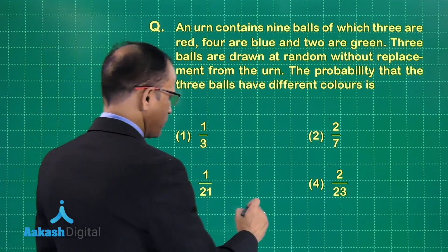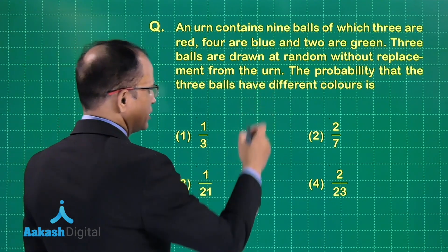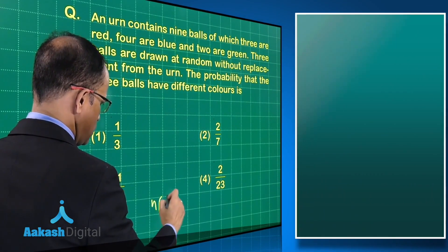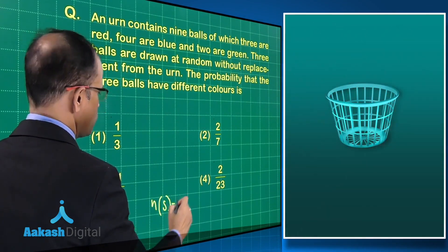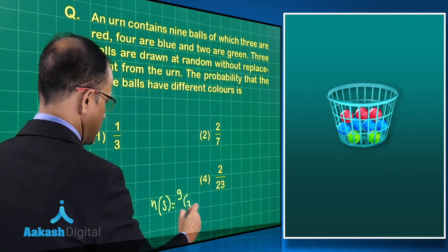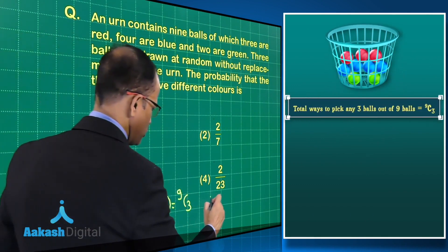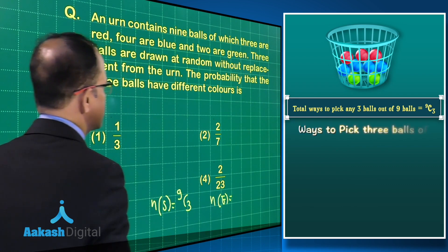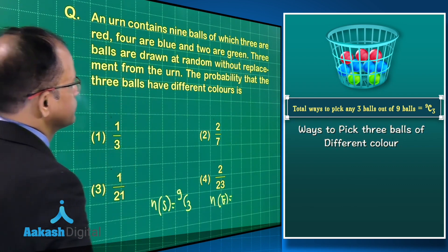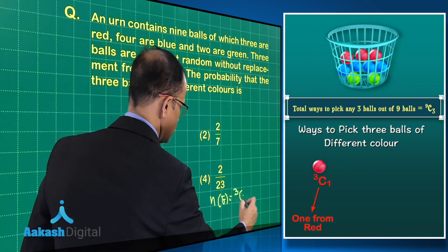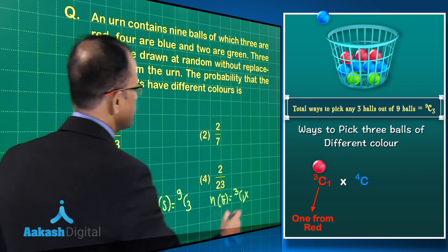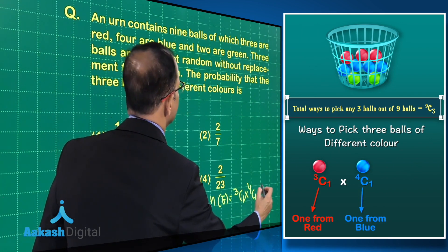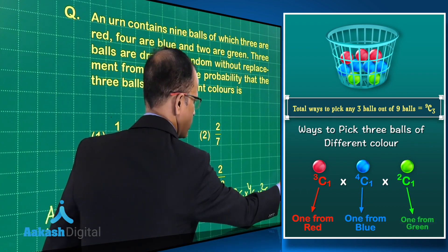Looking at the sample space, there are nine balls and three balls have been drawn. For the event, we have 3C1 times 4C1 times 2C1 — one ball of each color selected.